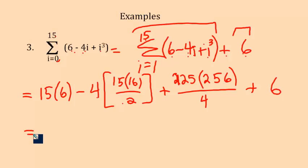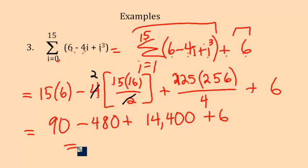And it is just number crunching from here. 15 times 6 is 90. 4 and 2 simplify a little bit. So let's see, 2 times 15 is 30. 30 times 16 is 480. This one I am going to need a little help on. We get 14,400. And then plus 6. Grind it all out. And you get 14,016 is what I am coming up with. So that is the general idea.